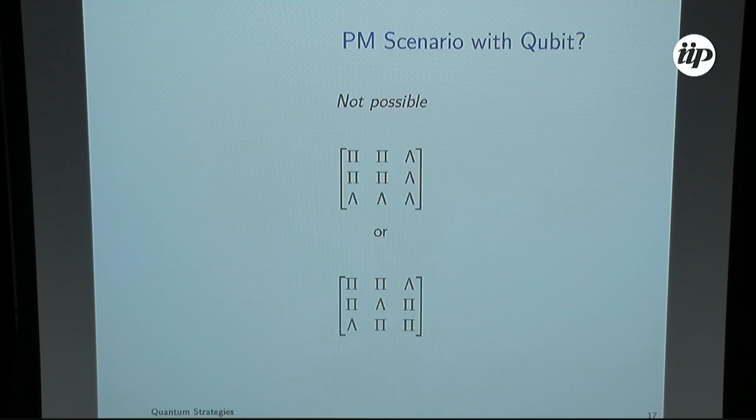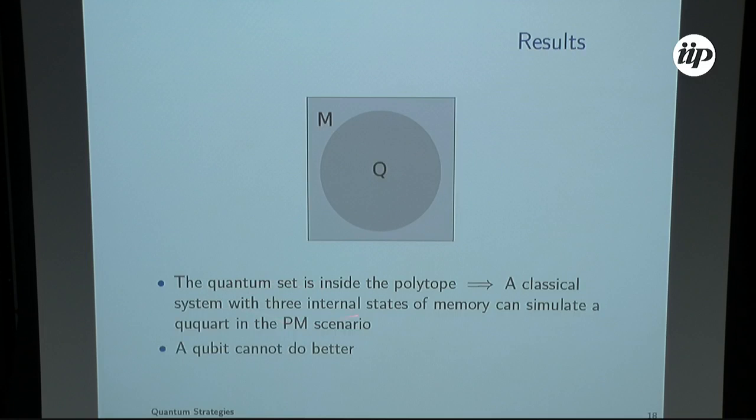So that's it. The qubits cannot reproduce the Peres-Mermin conditions. The final result is that we need three-state machines, and they are necessary and sufficient to reproduce the Peres-Mermin scenario. And a qubit cannot do better.